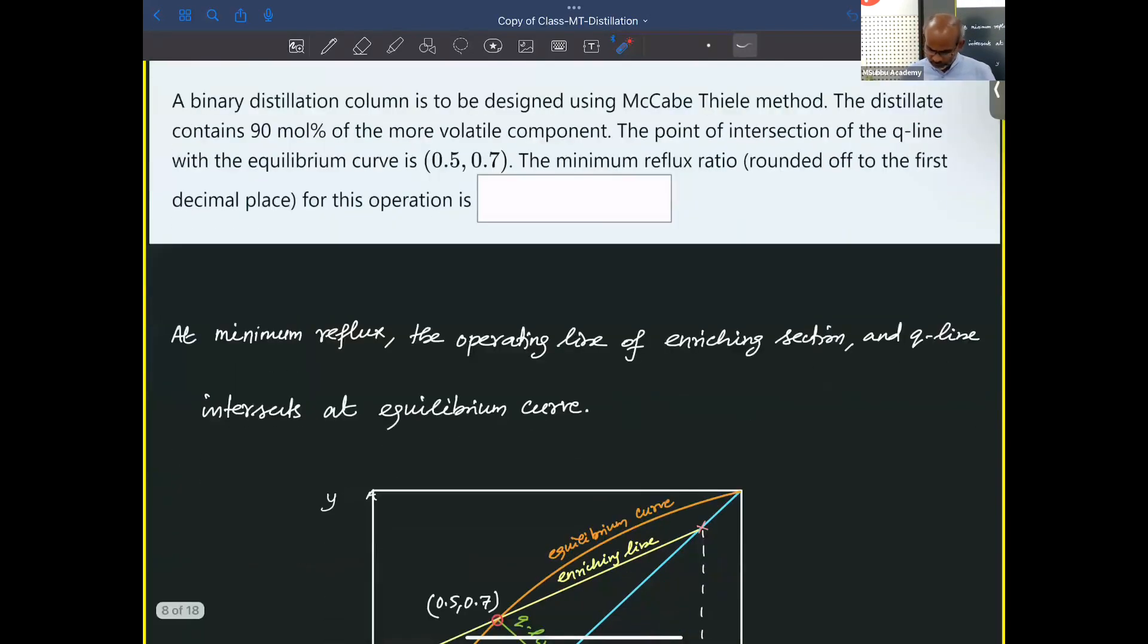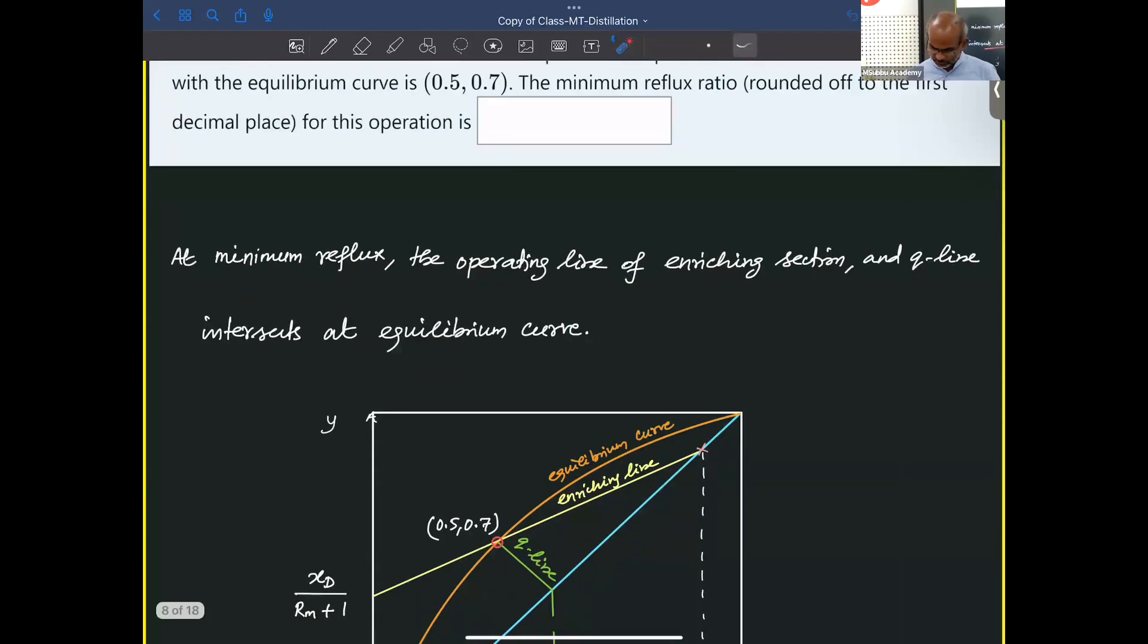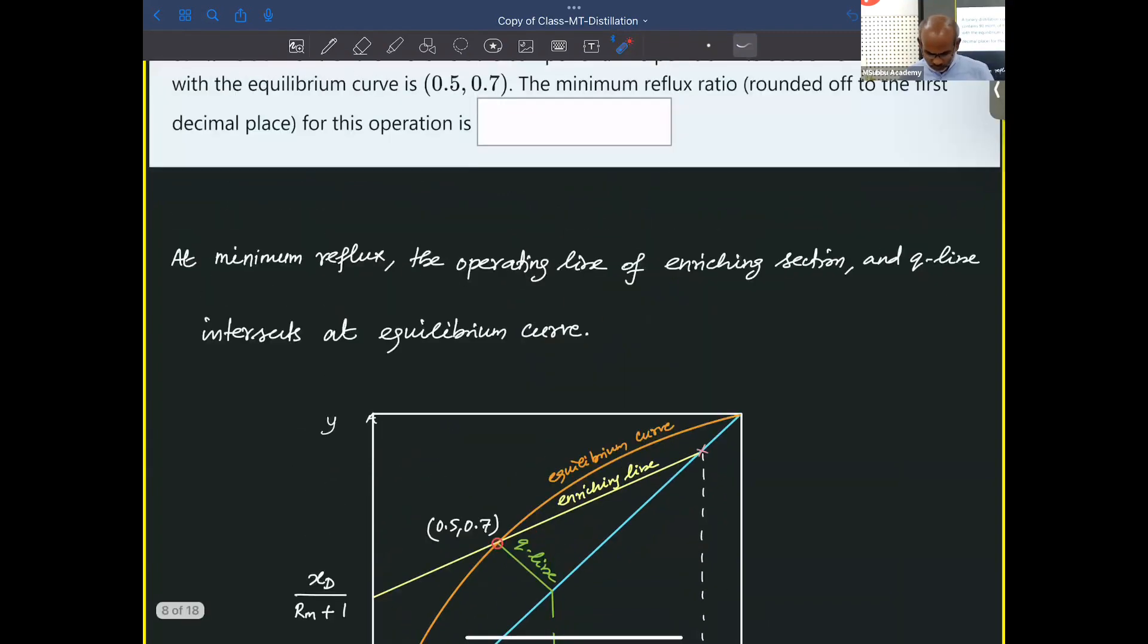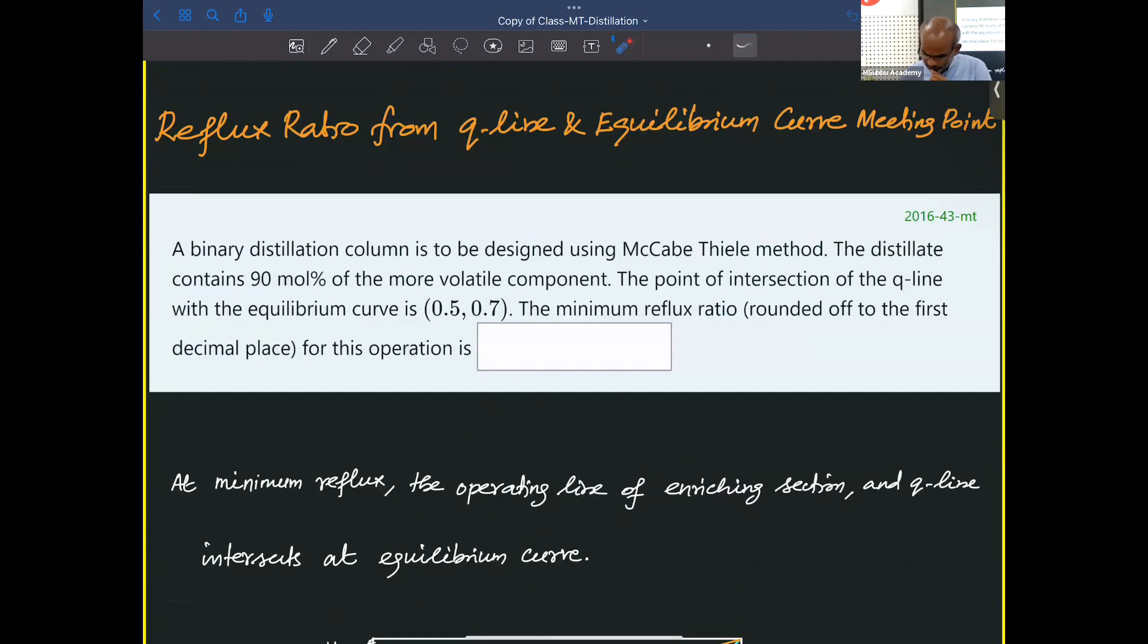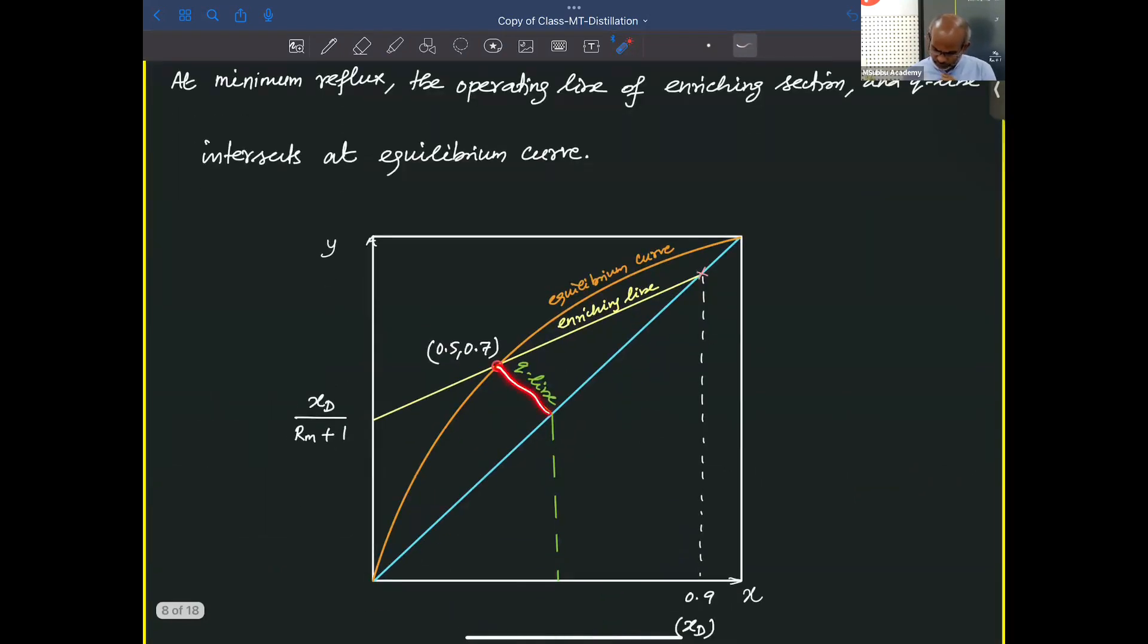Now, at the minimum reflux ratio, the operating line of enriching section and Q line are intersecting at the equilibrium curve. This is your equilibrium curve and the feed line. We are not given with anything about the feed quality. Simply, I am putting some line and we are given with this point. That is the meeting point of Q line and enriching curve. This point is known.